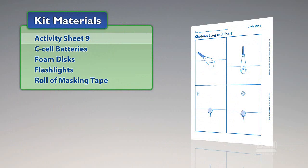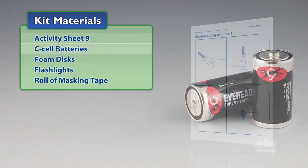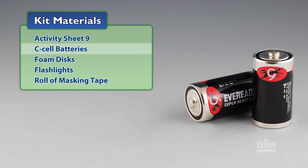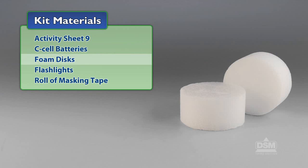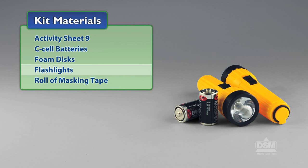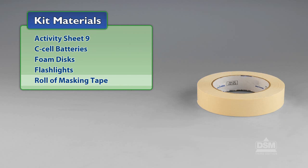You will need the following materials from the kit: Activity Sheet 9, C-cell batteries, foam discs, flashlights, and a roll of masking tape.